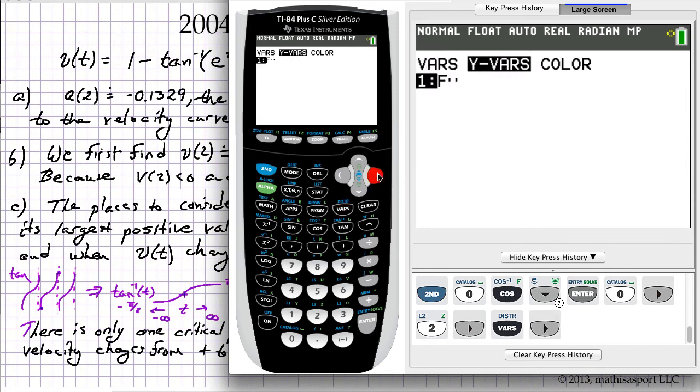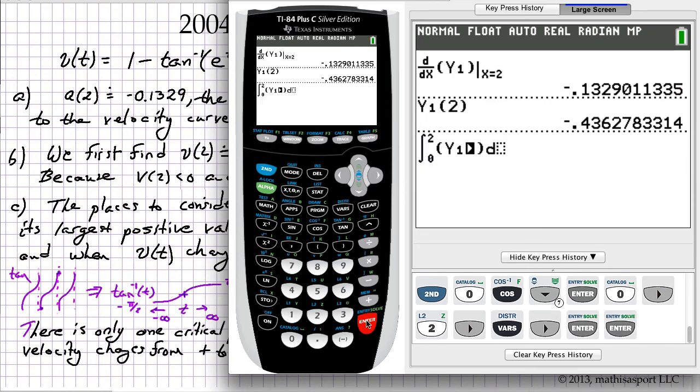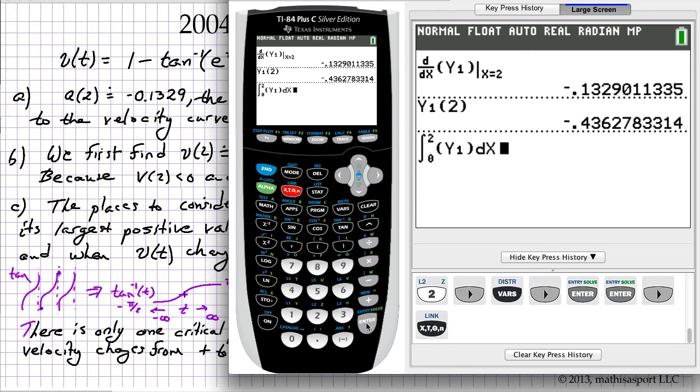And we need to go from 0 to 2. We're integrating or finding the signed area under the velocity curve. Fortunately we put that in as y1. And as always instead of using t for time we used x.